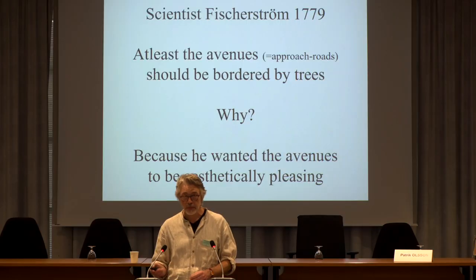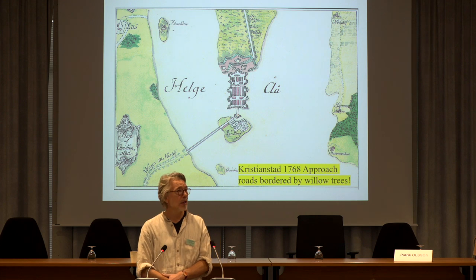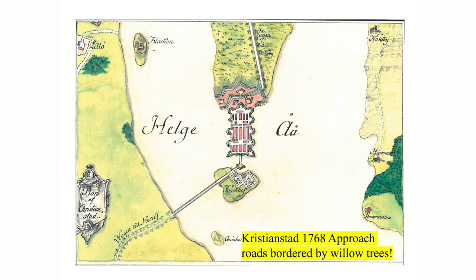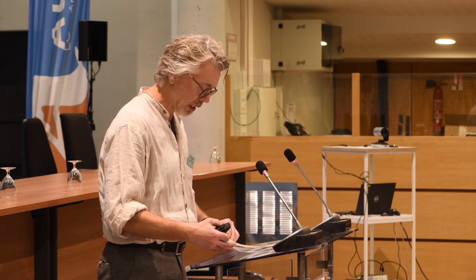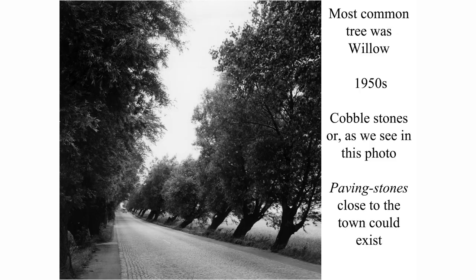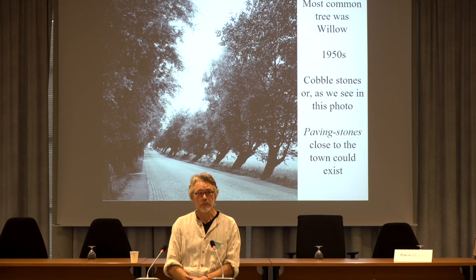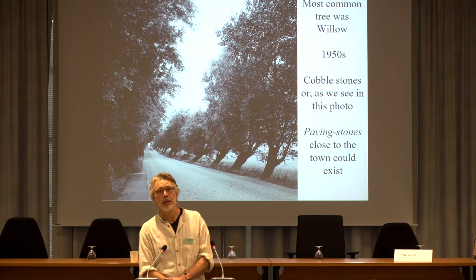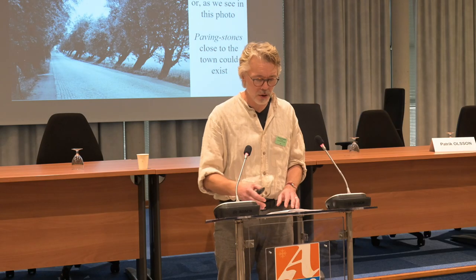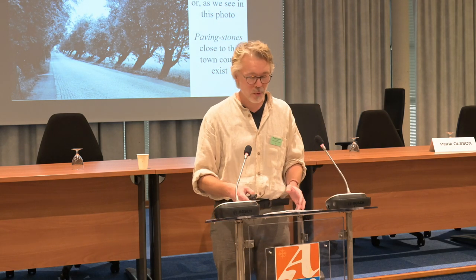So a road with trees on both sides — that is what we talk about as avenues today. One example of this is the city of Kristianstad in the late 18th century. We see the entrance roads or approach roads leading into the old city from both the north and the south. These roads were mainly lined with willow, the most common type. They could have cobblestones or paving stones — it's a way of enhancing the road and aesthetically improving the landscape.